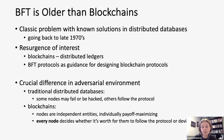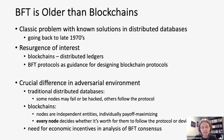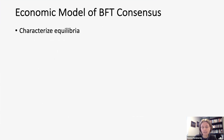For a protocol to be actually implemented, it needs to be incentive compatible — meaning every node finds it optimal to follow the protocol. That means we need to use economic modeling and think about economic incentives in the analysis of blockchain consensus using Byzantine fault tolerant protocols.